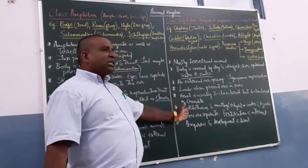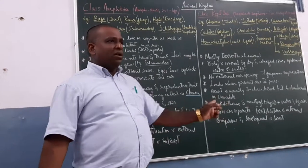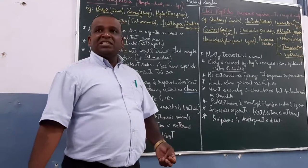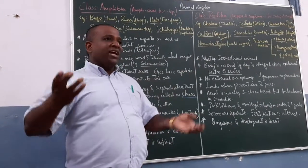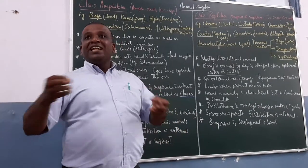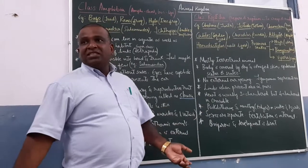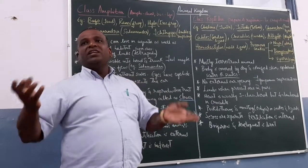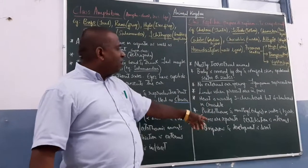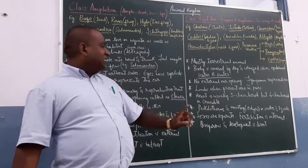Then, molting or ecdysis. That is, skin is shed. Whenever they are growing, periodically the skins are shed. Snake skin. You can see that lizards also shed their skin. And whenever they are growing, the old skin is shed. That we call it as ecdysis or molting or shedding of skin. In case of snakes and lizards, you can observe this.